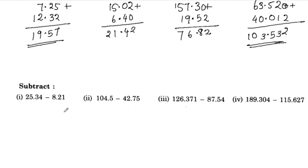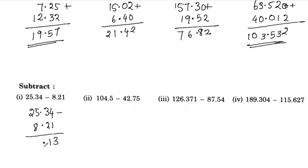Subtract. 25.34 minus 8.21: 4 minus 1 is 3, 3 minus 2 is 1, 5 minus 8 — borrow — is 1. The answer is 17.13.